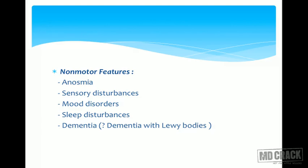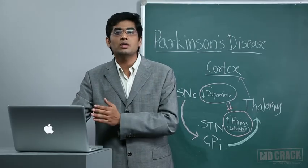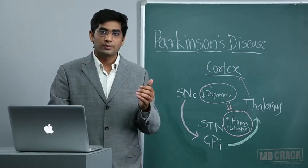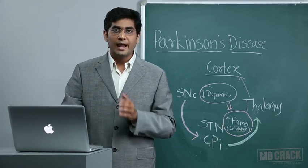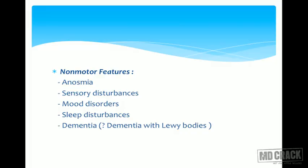Coming to non-motor features: the reason for dividing features into motor and non-motor is that patients receiving levodopa will have improvement in motor features, but non-motor features do not always improve and require specific attention. Non-motor features include anosmia — decreased smell sensation. This is a classical example: if an MCQ asks about anosmia as a feature, the answer should be Parkinson's disease.